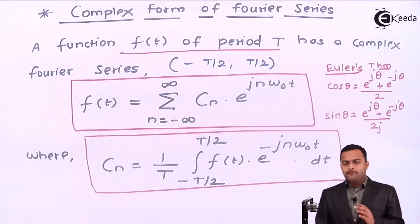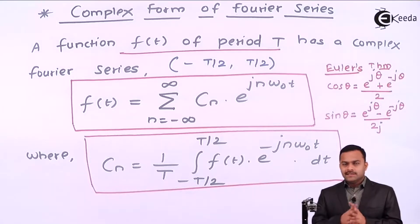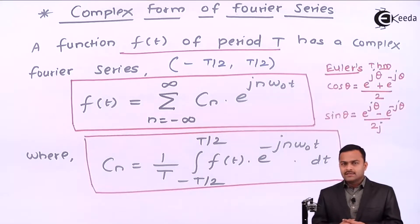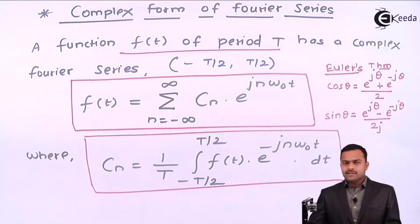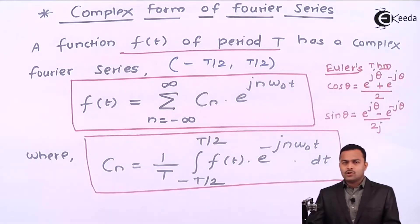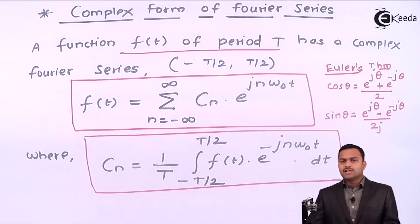In this video we have seen some basic concepts related to Fourier series, which states that any periodic function can be decomposed such that we get only sinusoidal terms out of it. For n equal to 1 we call it the fundamental component, and for n not equal to 1 the components obtained are called harmonics. Any function can be represented in two types of Fourier series: the trigonometric form where sine and cosine are present directly, and the complex form. By using Euler's theorem we can convert trigonometric series into complex form or vice versa.